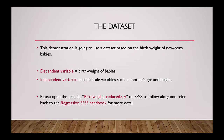The dataset we are going to be using for this tutorial is based on the birth weight of newborn babies. Our dependent variable will always be the birth weight of babies, and we will use multiple different independent variables which are all scale variables, such as the mother's age and height. Please open the data file 'birth weight reduced' in SPSS to follow along, and refer back to the regression SPSS handbook for more detail.